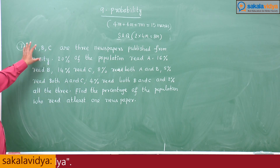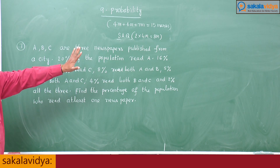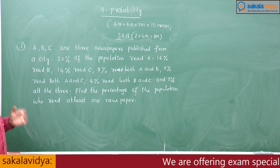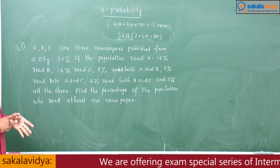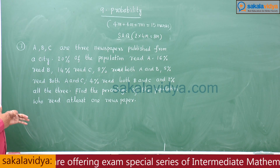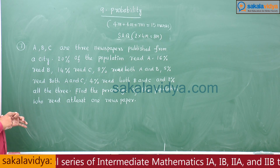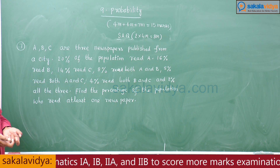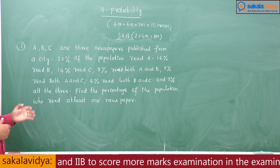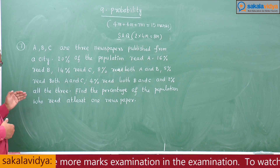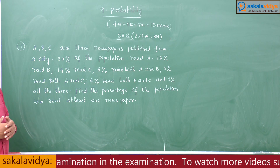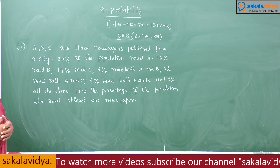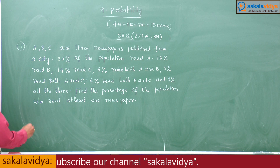Suppose A, B, C are the 3 events. We have P(A), P(B), P(C), P(A∩B), P(A∩C), P(B∩C), and P(A∩B∩C) given. We are asked to find the population who read at least one newspaper, that means P(A∪B∪C). We calculate this using the addition theorem.